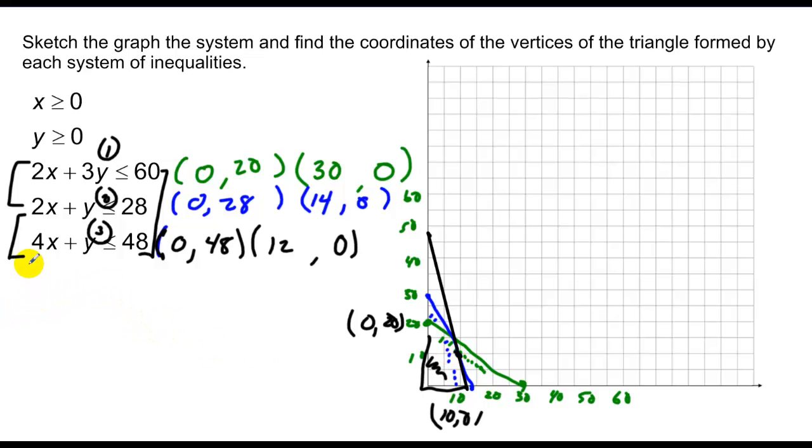I'm going to take and multiply the top equation by a negative, so I have negative 2x minus y equals negative 28. Bottom equation, 4x plus y equals 48. Add, I get 2x equals 20, x equals 10. So at 10, we have another intersection point that appears.